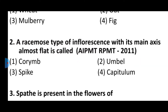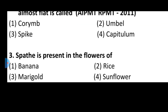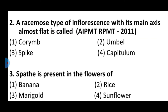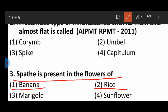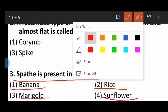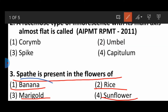Question number three: Spathe is present in the flower of — option one: banana, option two: rice, option three: marigold, option four: sunflower. The correct answer is banana, where the spathe can be found.